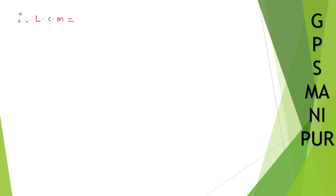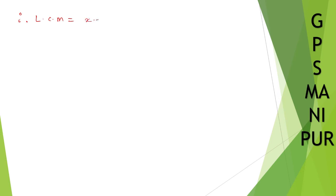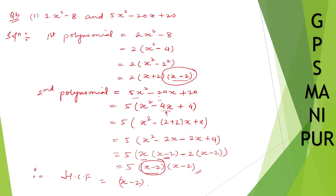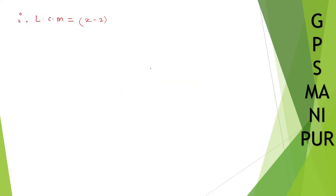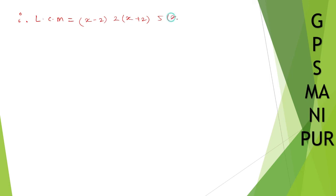Now let us find the LCM. Take the HCF common first: x minus 2. Then write down everything else — from the first polynomial: 2 into (x plus 2), and from the second: 5 into (x minus 2). So LCM equals 10 into (x minus 2) squared into (x plus 2). That's all, thank you so much, we will meet in the next video.